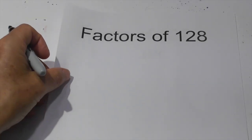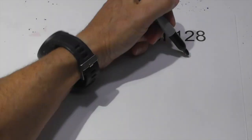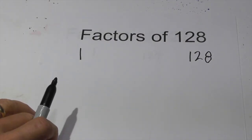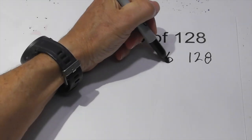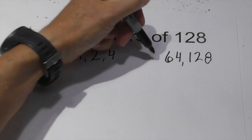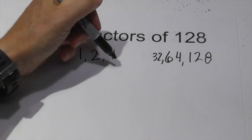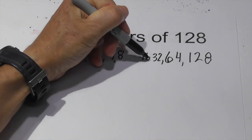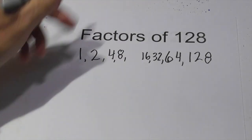The factors of 128 — there are several of them. I'll start with 1 times 128, then we have 2 times 64, then we have 4 times 32. We have 8 times 16, and that is it.